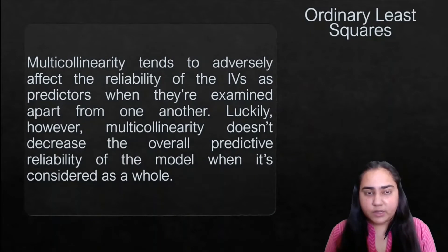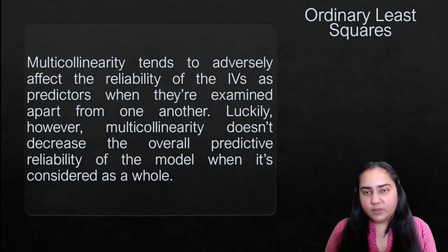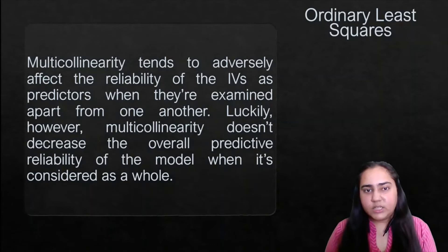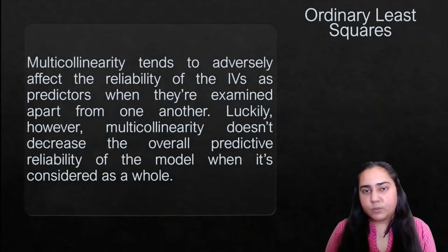Multicollinearity tends to adversely affect the reliability of the IVs as predictors when they are examined apart from one another. If you try to examine these variables separately and predict how each variable affects the dependent variable individually, that would affect the reliability of your independent variables. Luckily, this multicollinearity doesn't decrease the overall predictive reliability of the model when it is considered as a whole. So you should use all these variables together to create a regression model, and if that is the case then multicollinearity is not a problem.